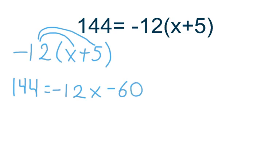Next you add positive 60 on both sides. Both 60s will cancel out and you add 144 to 60 which will give you 204.